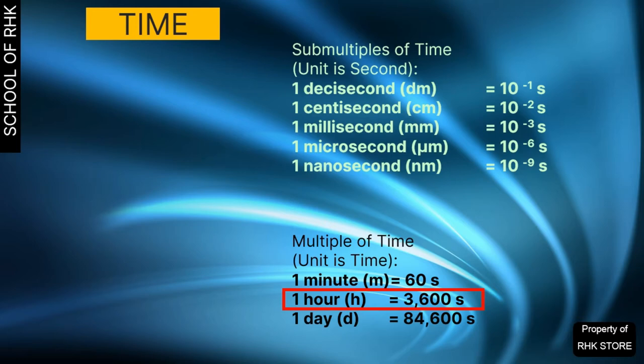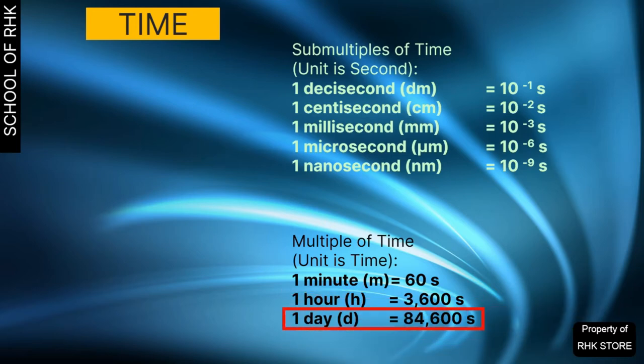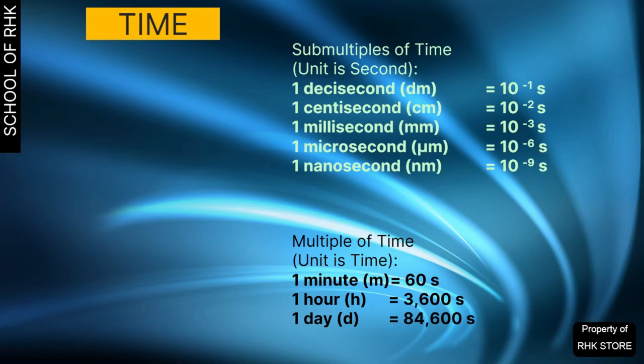Multiples for large time include: one minute equals 60 seconds, one hour equals 3600 seconds, and one day equals 86,400 seconds. Before discussing time measuring devices used in physics, please watch the video on 'What is Time,' which covers how time is viewed in different schools of thought and disciplines. The link is in the description below.